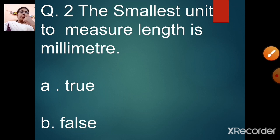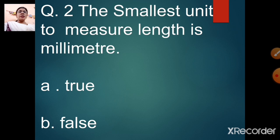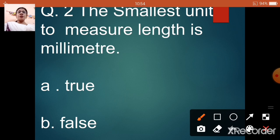Question number 2: the smallest unit to measure length is millimeter. Option A: true. Option B: false. Now children, the smallest unit to measure length is millimeter — true or false? The statement is true. Because length is measured in meter, and millimeter is the smallest unit. The answer is option A, true.